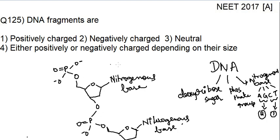Now, when you see this, the question is: DNA fragments are positively charged, negatively charged, neutral, or either positively or negatively charged depending on the size. By looking at this structure, you can easily see that this is the phosphate group which I'm talking about. This is the phosphate group.